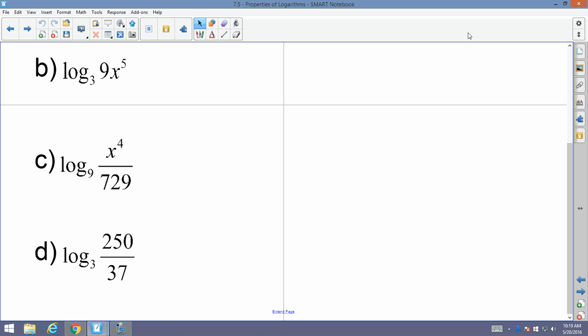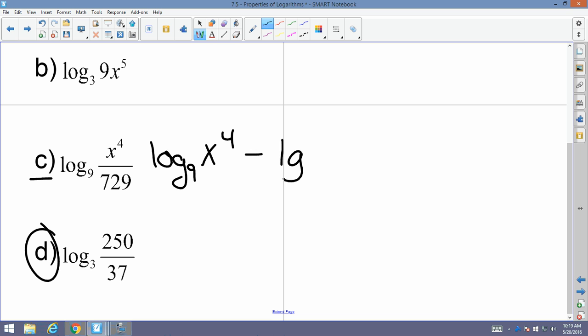I believe that we did B and C already. Okay, so we're on D right here. C? Okay, let's do C then. No big deal. So I've got log base 9 of x to the 4th, we'll start there, minus log base 9 of 729. Very good. Now, we're not done. Not even close to done.